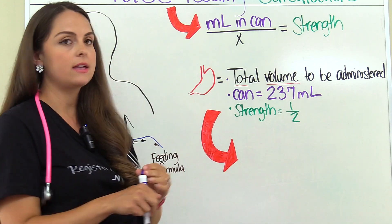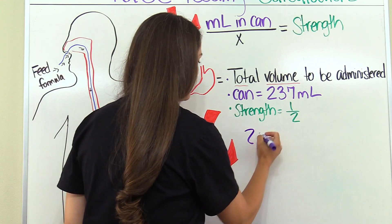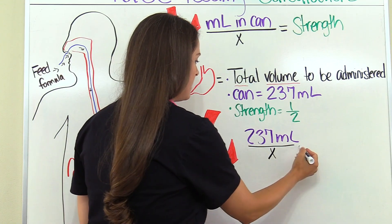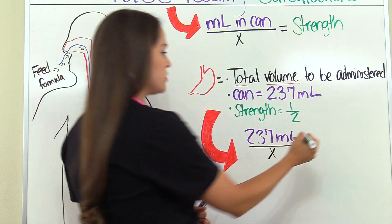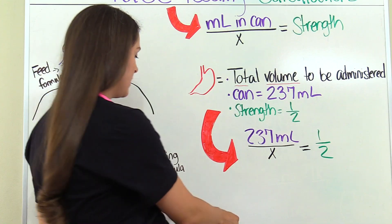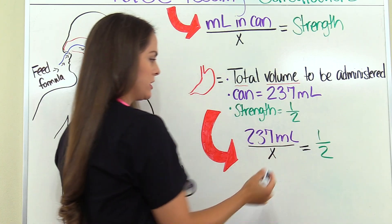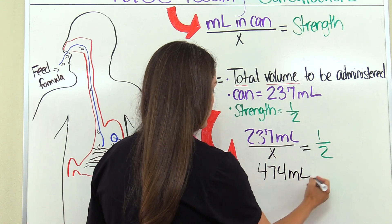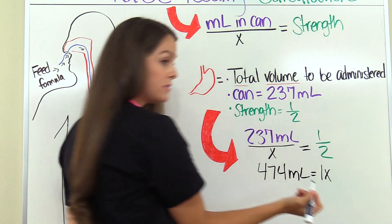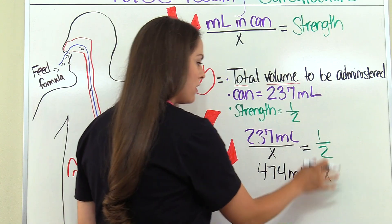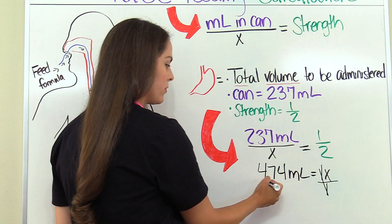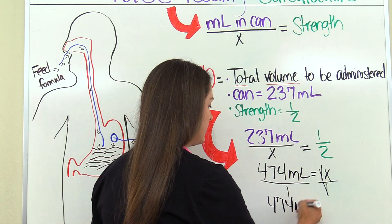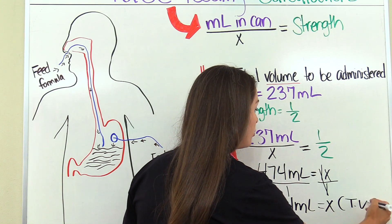We're going to set our formula up with milliliters in the can — it told us there was 237 milliliters in that can of Jevity — and we're going to put that over X. Then we have the strength, and it told us it was half strength, so we put that as one-half. Now we multiply everything across from each other: 237 times 2 is 474 milliliters, and X times 1 is 1X. We divide both sides by 1, and we get 474 milliliters equals X. This is our total volume.